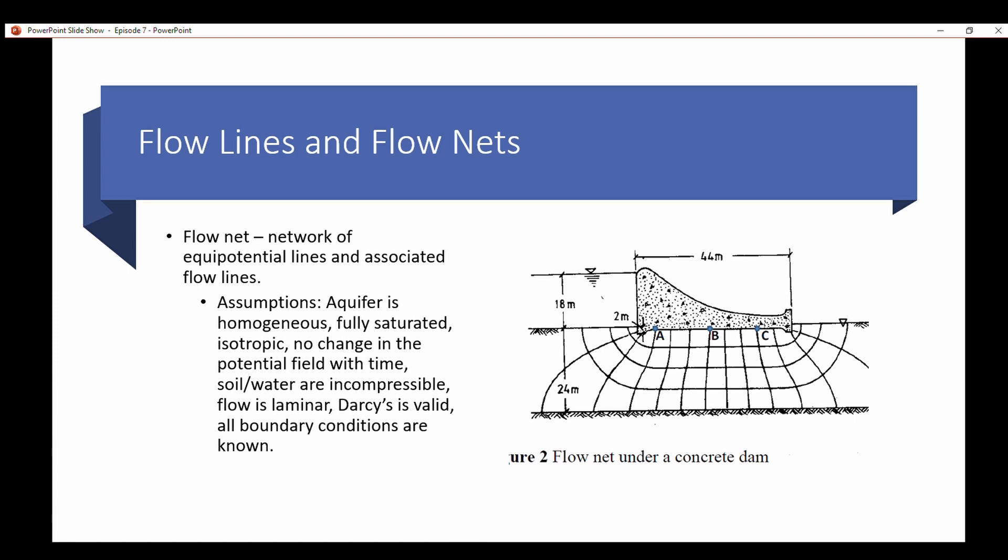A flow net is basically the culmination of equipotential lines, which are just groundwater contours really, and the associated flow lines. There are assumptions made when doing a flow net. You assume that the aquifer is homogeneous, fully saturated, and isotropic. These are review terms, but homogeneous basically means the same material throughout. Isotropic means that groundwater flow is equal in all directions in terms of permeability, I should say. The vertical and horizontal hydraulic conductivities will be equal. There's no change in the potential field with time. Soil and water are incompressible. The flow is laminar, which makes Darcy's valid, and all boundary conditions are known.